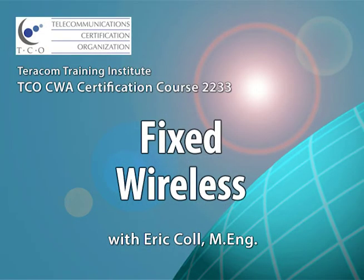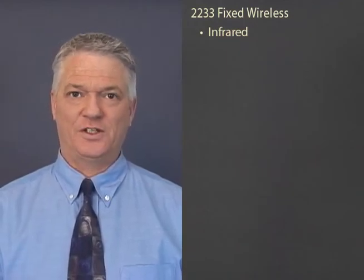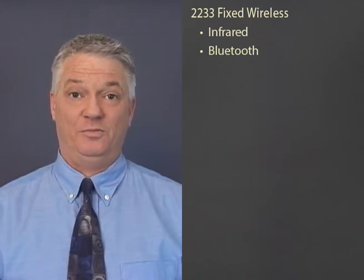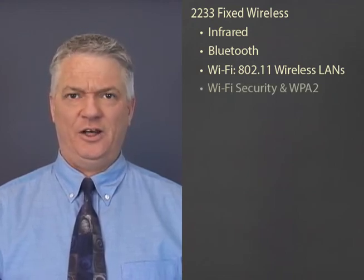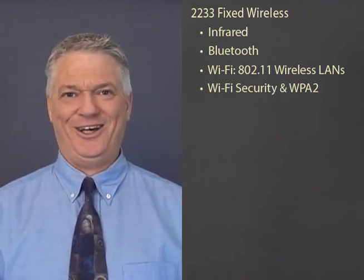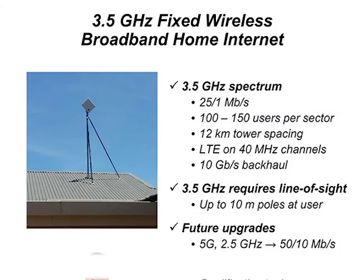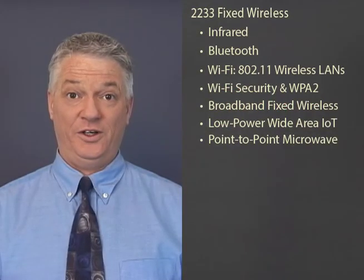In the third and final course in the certification package, we'll do a survey of other types of wireless technologies, primarily fixed wireless, where mobility doesn't come into the equation. We'll start with light and infrared — used in remote controls — then Bluetooth, which has become ubiquitous, and Wi-Fi, more properly called 802.11 wireless LANs. We'll talk about security on wireless LANs and WPA2 personal. Then we'll go over broadband internet to the home via fixed wireless, low-power wide area networks for the Internet of Things, point-to-point radio systems, and satellites.